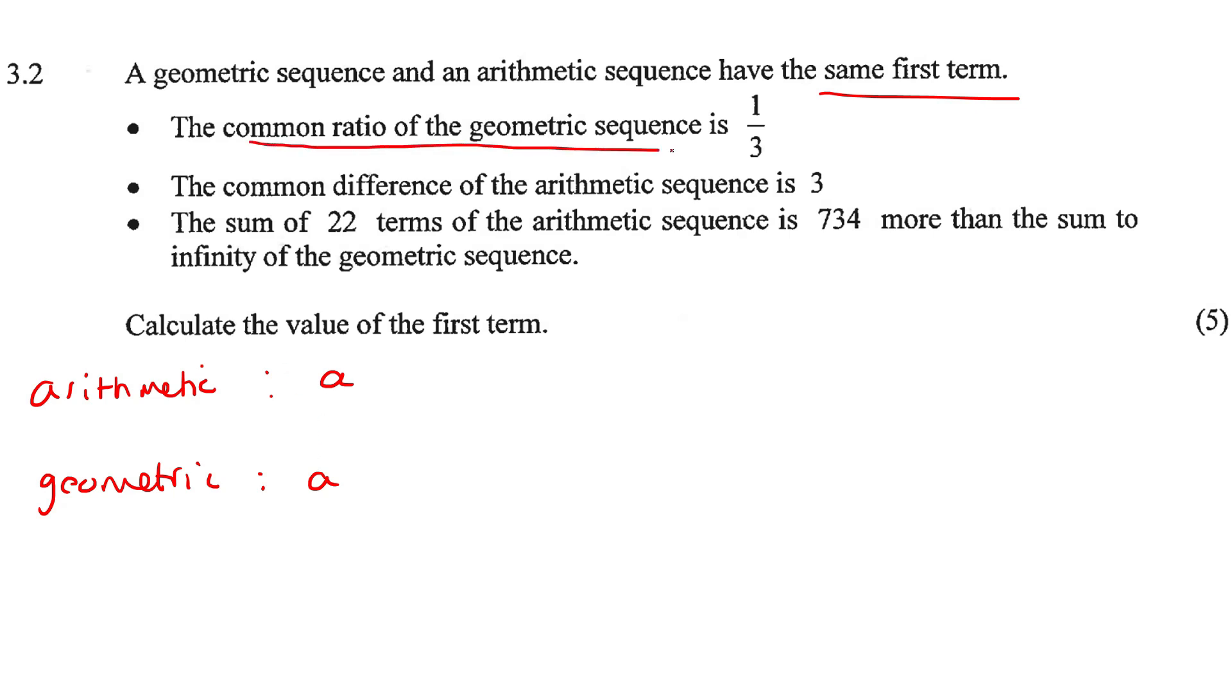Now, the common ratio of the geometric is a third. So that means the next term would be a third a. The next term would be a third times a third, which is going to be 1 over 9 a. Okay, because all I'm doing is to go from here to here, I multiplied by a third. Then to go from here to here, I multiplied by a third.